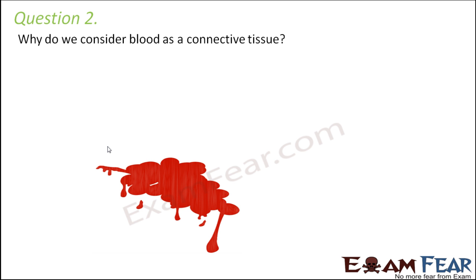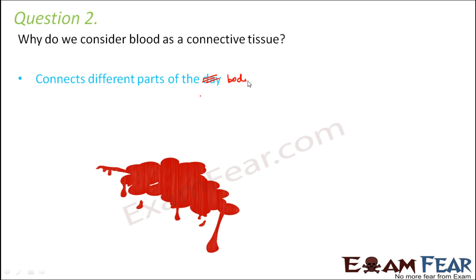Question number two: why do we consider blood as a connective tissue? Connective tissue is something that connects different parts of the body. Blood connects different parts of the body by flowing from one corner to the other, connecting the entire body together. Firstly, it connects different parts of the body. Secondly, it is mesodermal in origin, which is also a characteristic of connective tissue.